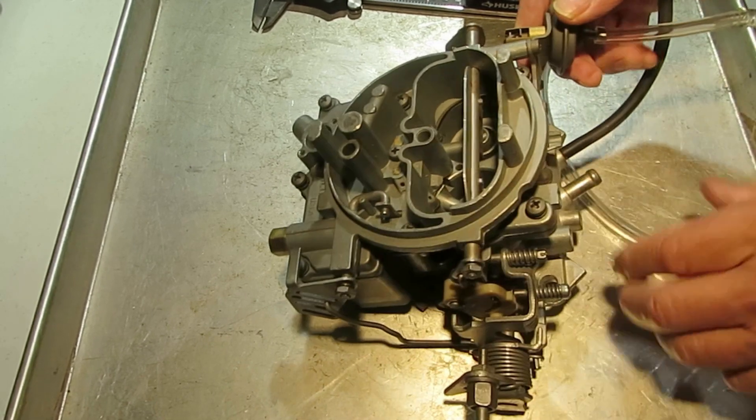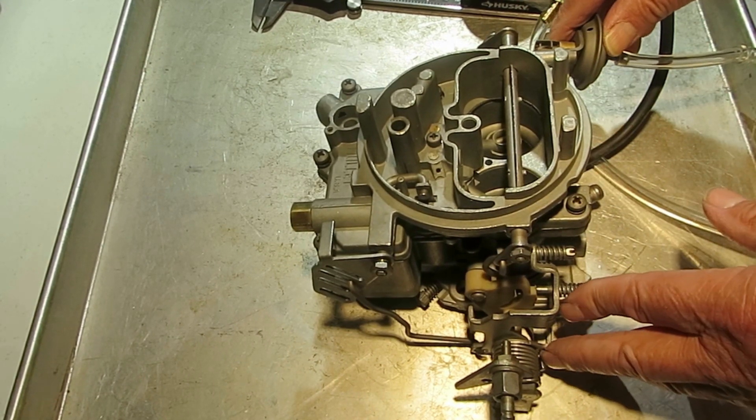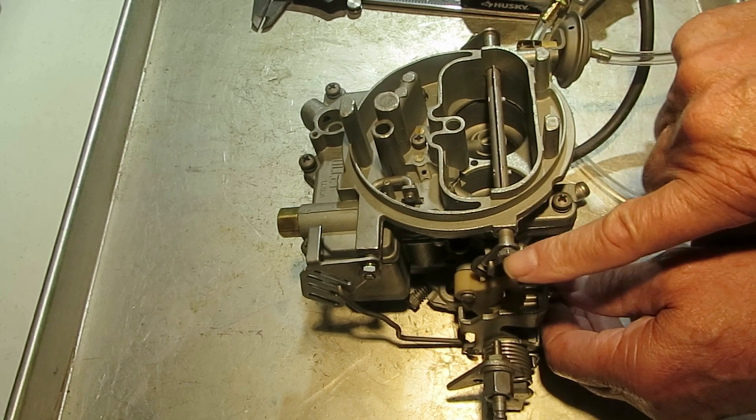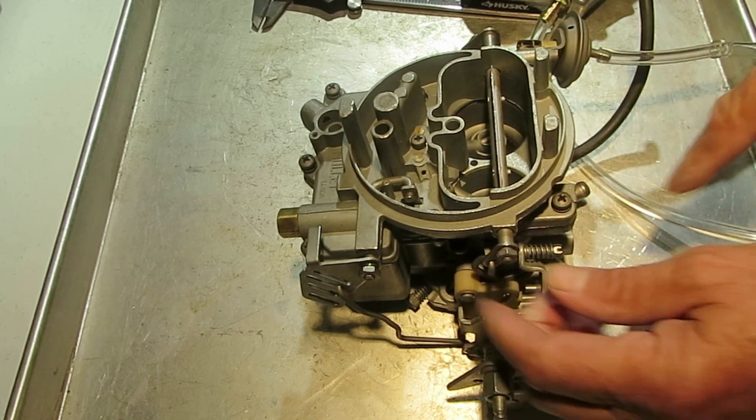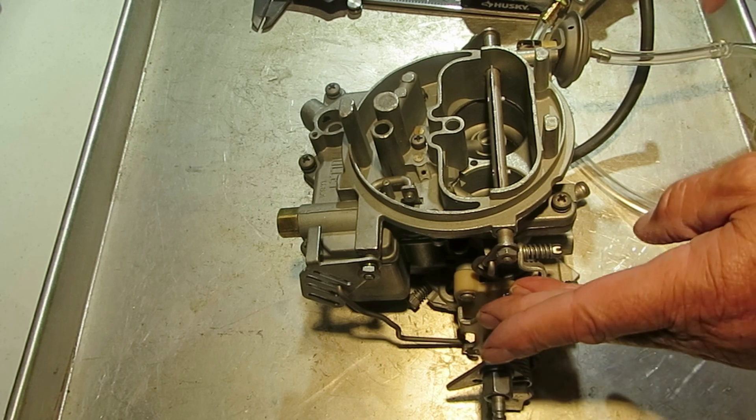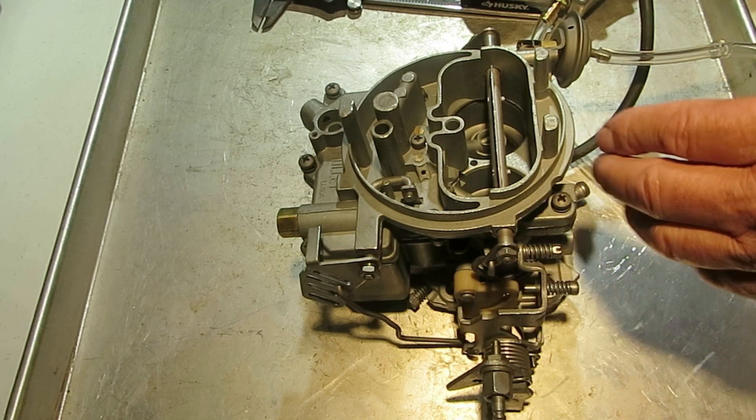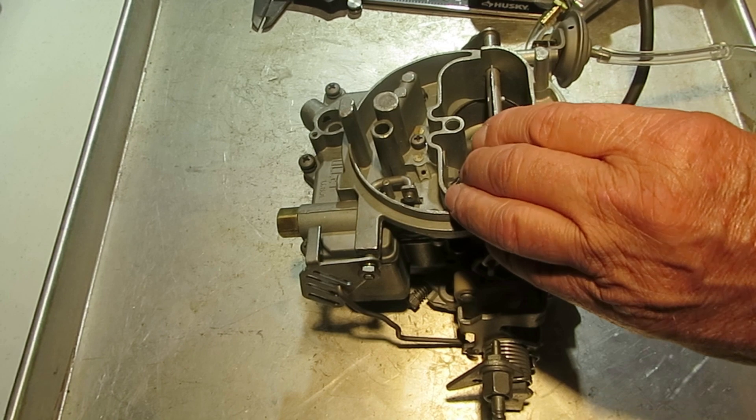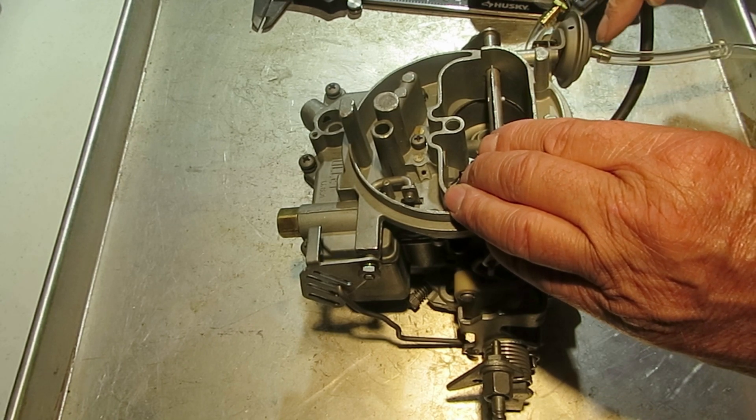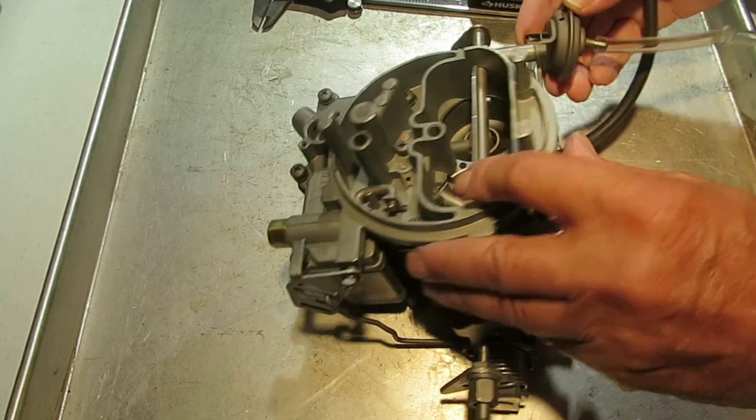So you can do it on the car or do it on the bench. If you do it on the car, take your fast idle loose here so that doesn't get in the way. Then you start the car up and the vacuum from the car will pull this piston in right here.